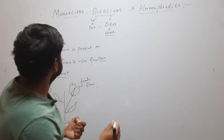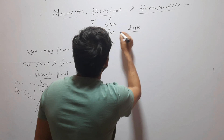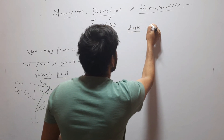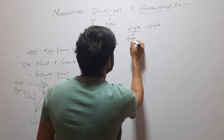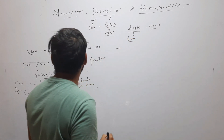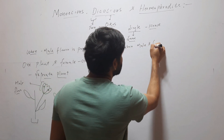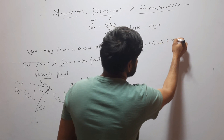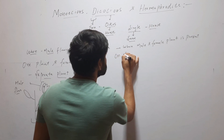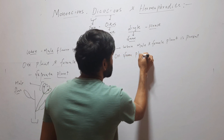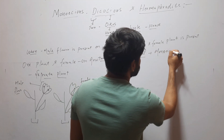Now, coming to this term: Monoecious. 'Mono' means single. Similarly, Oikos means house — means same house, same place. So when male and female flowers are present on the same plant, that condition will be called Monoecious.